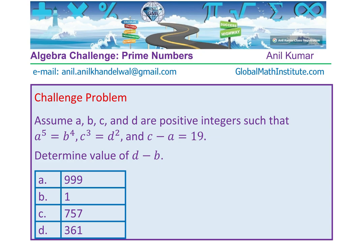Here is your question for the day. Assume A, B, C and D are positive integers such that A to the power of 5 equals B to the power of 4, C cubed equals D squared, and C minus A equals 19.